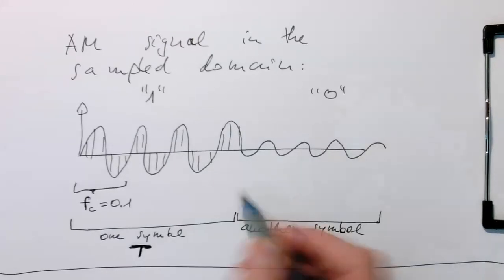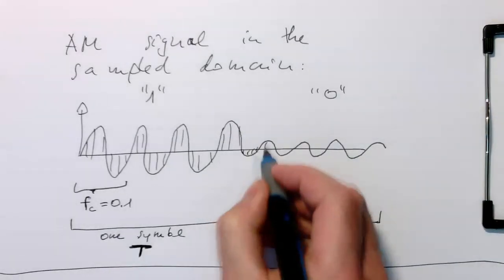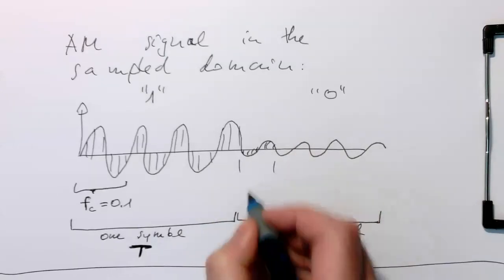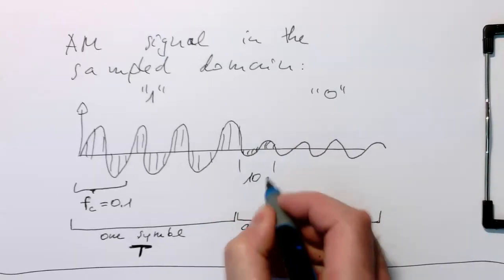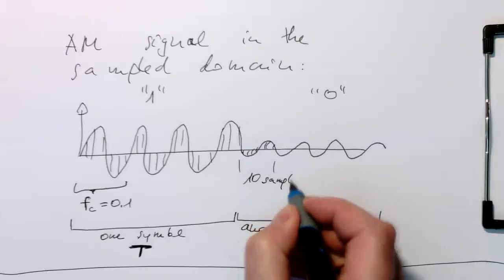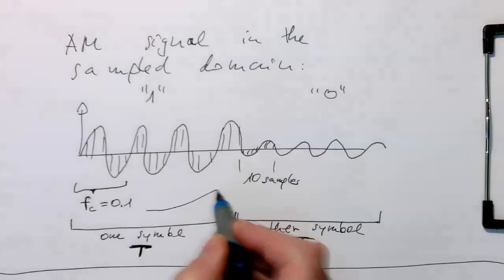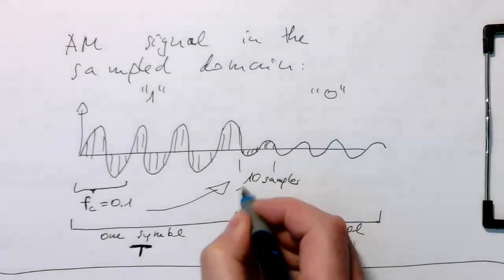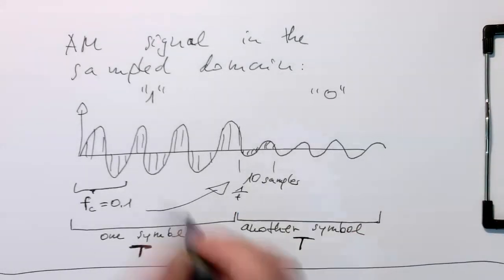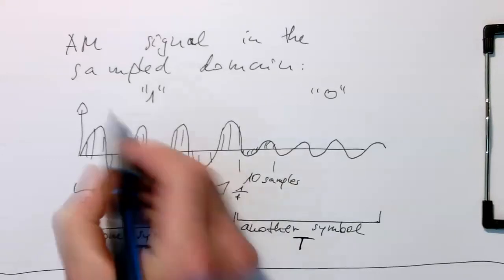And again here, this lasts exactly 10 samples. If we have fc of 0.1, remember this is 1 over fc. And it's the same here. This also lasts 10 samples.